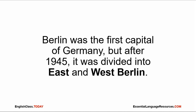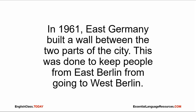Berlin was the first capital of Germany, but after 1945 it was divided into East and West Berlin. In 1961, East Germany built a wall between the two parts of the city. This was done to keep people from East Berlin from going to West Berlin.